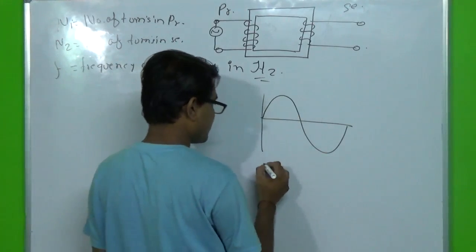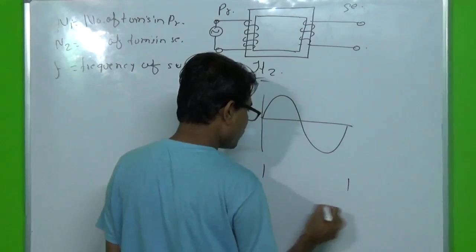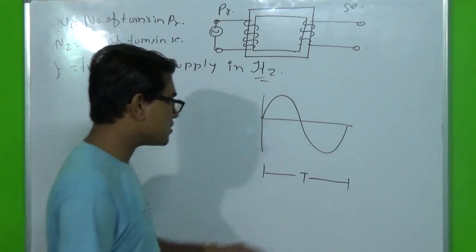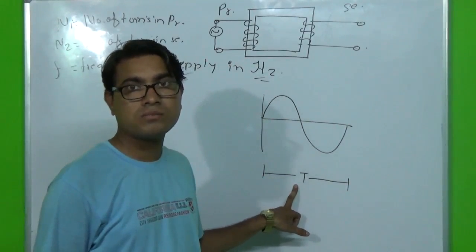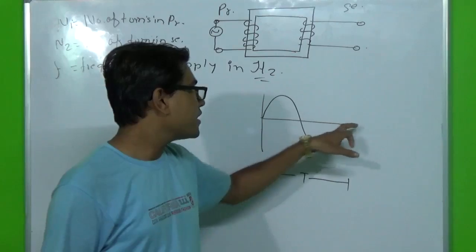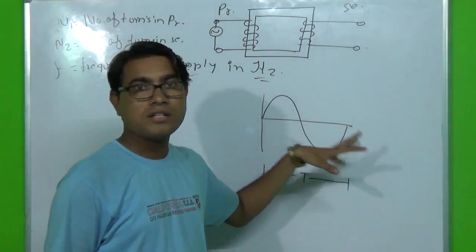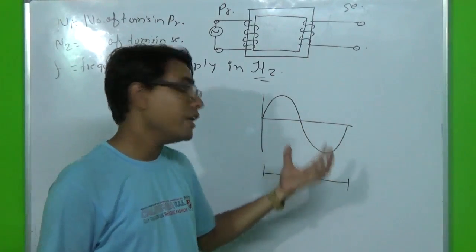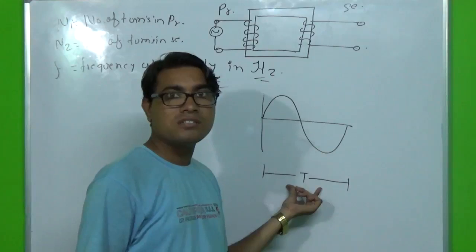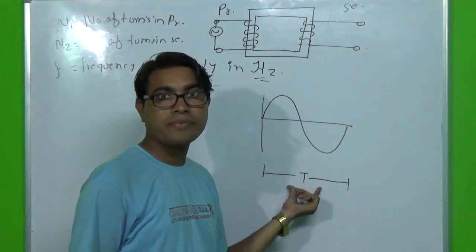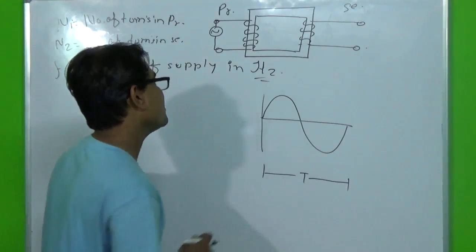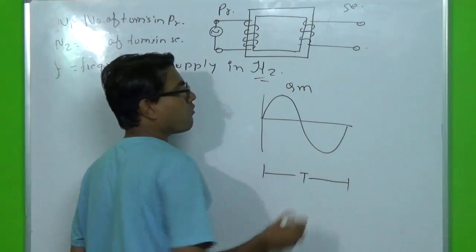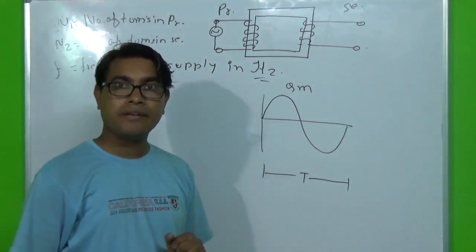We also assume that the time period of the wave is T seconds. The X-axis represents time in seconds. This flux wave has a time period of T. Here the flux takes its maximum positive value which is Phi subscript M.